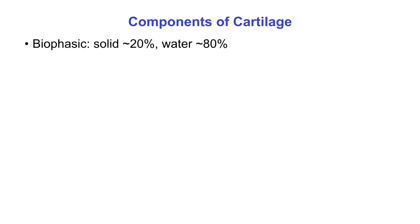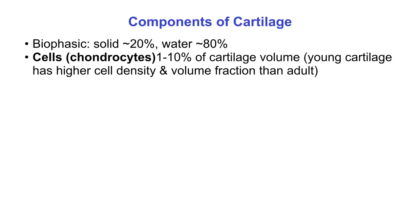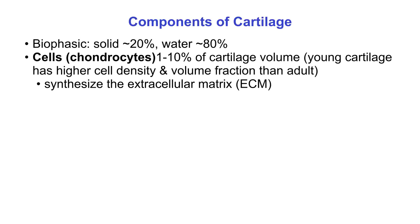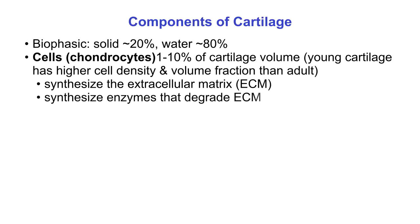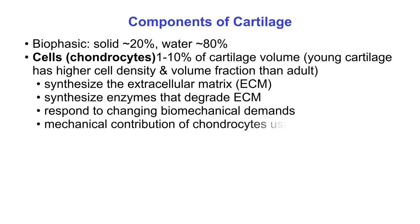Cartilage, like all tissues, is said to be biphasic with about 20 percent solid components and 80 percent water. The cells, or chondrocytes, occupy 1 to 10 percent of the cartilage volume, with young cartilage having a higher cell density and the lower number being more typical of adult cartilage. Chondrocytes synthesize the extracellular matrix and the enzymes that degrade the matrix, thereby allowing the joint tissue to respond to changes in biomechanical demands. The contribution of chondrocytes directly to tissue mechanics is usually neglected.